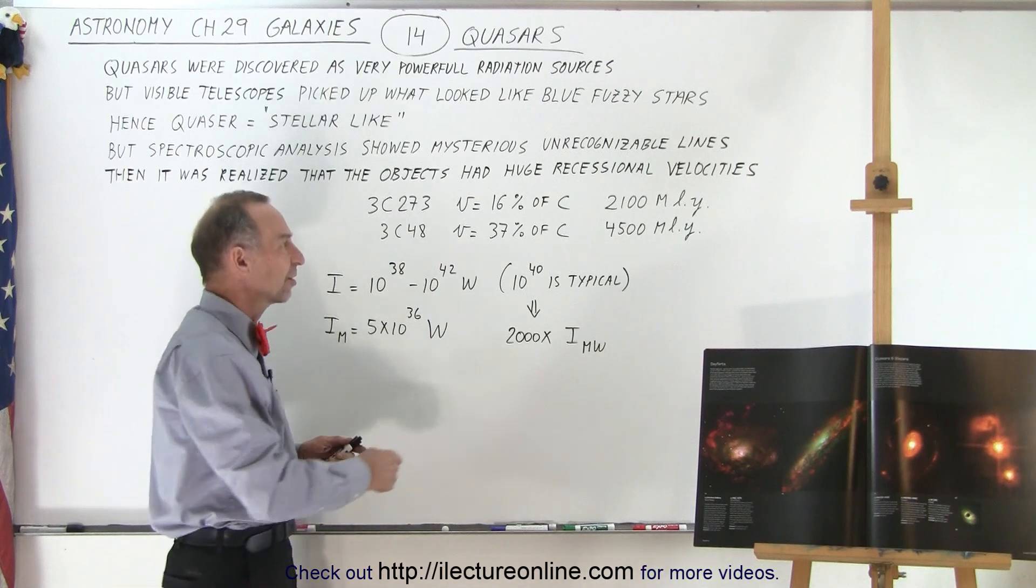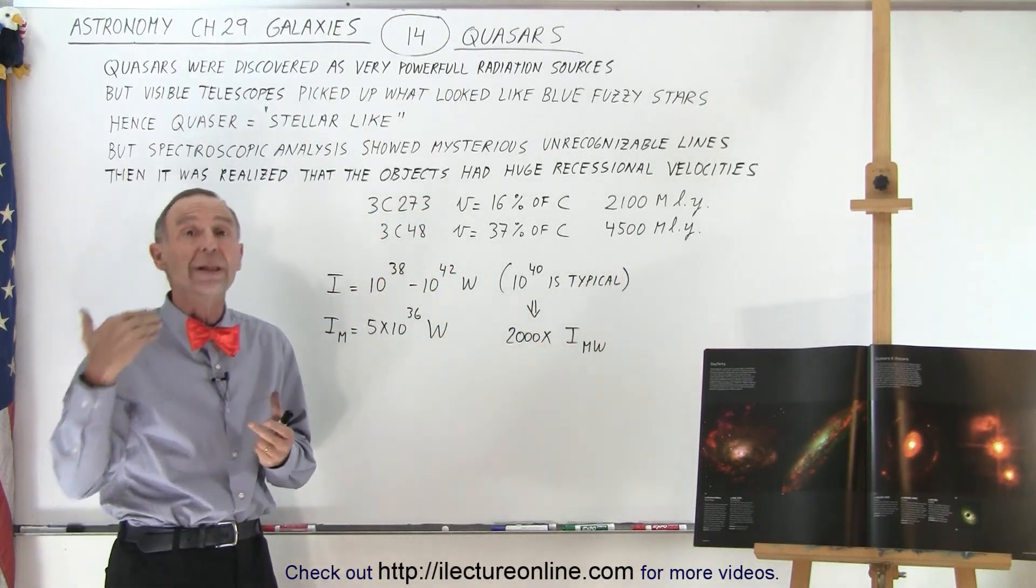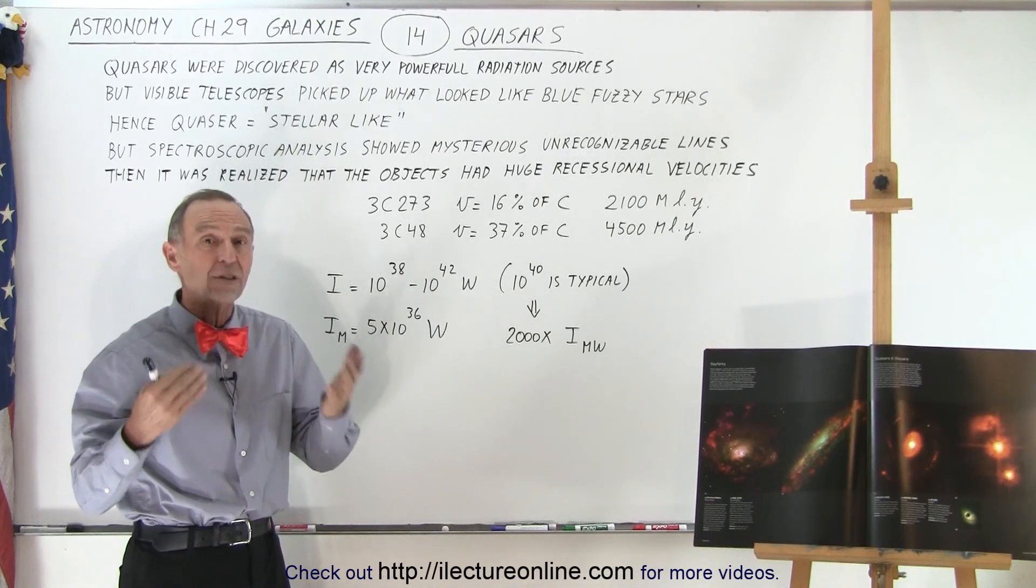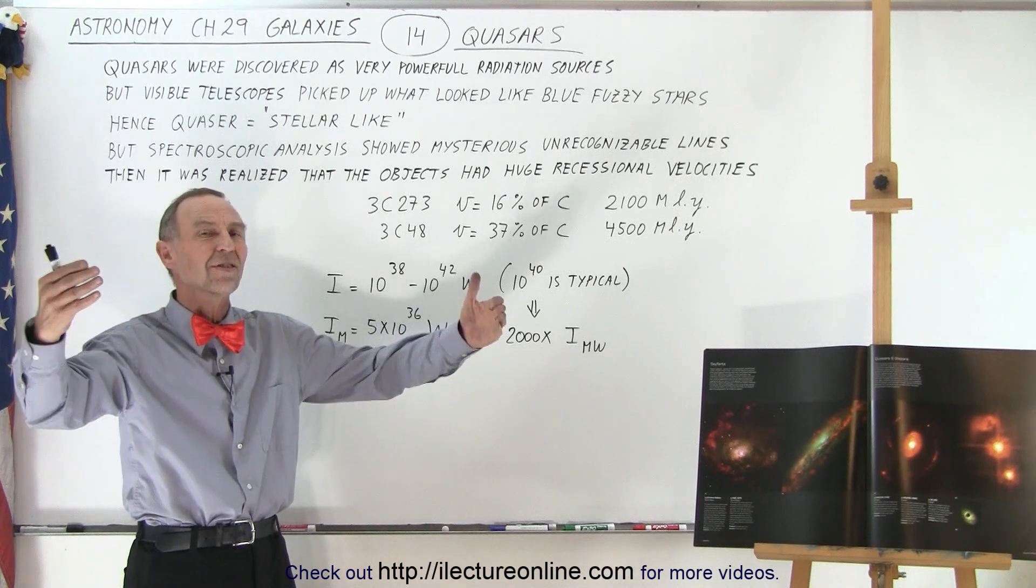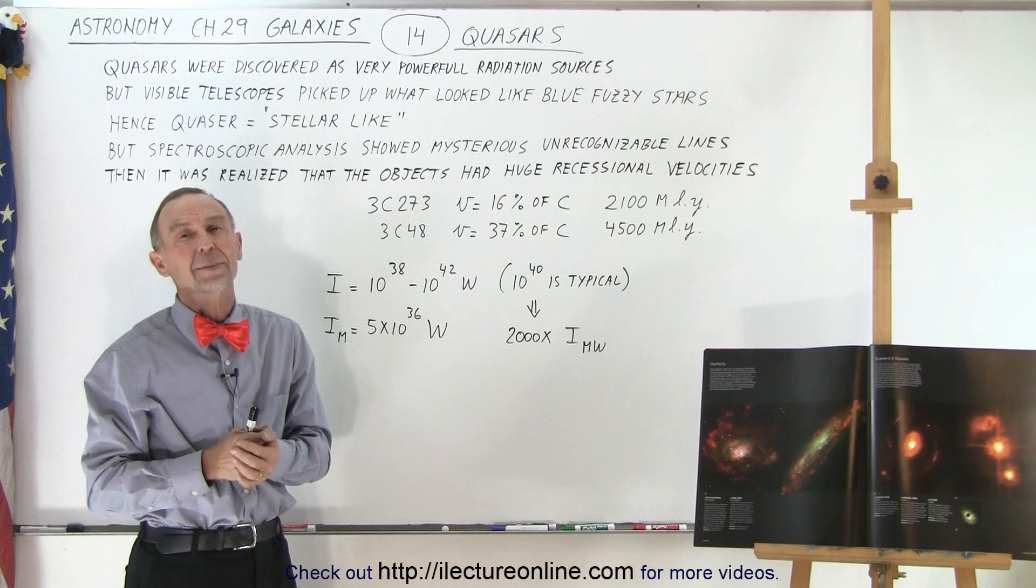When we talk about objects that are this far away, that means that we're seeing things the way they were billions of years ago. Sure enough, they began to realize that many of these quasars were at huge distances, and when we started looking at things that were closer by, quasars were not very common.